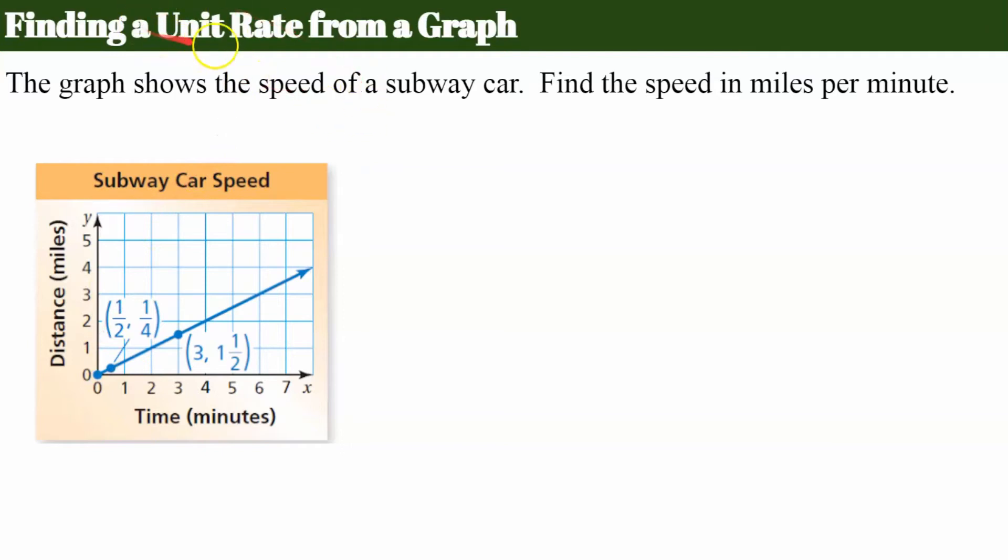Now let's review unit rate. When we're finding the unit rate we want to know per for one, so the denominator of our ratio will be one. So how much something cost for one, or right here it's one minute. We want to find the speed in miles per minute, so how many miles did we go in one minute?